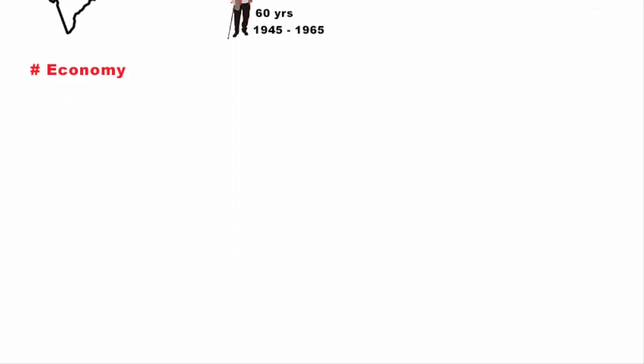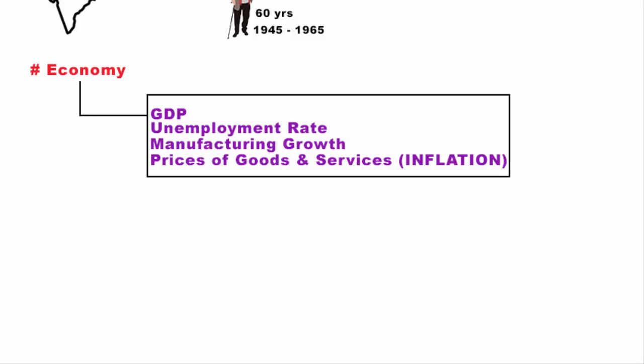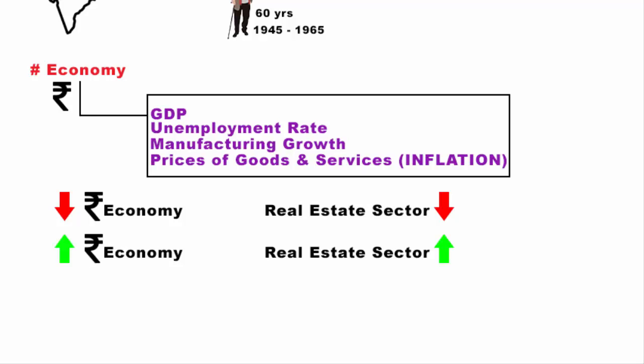The second factor is the economy as a whole. When we think of the word economy, economic terms like GDP, unemployment rate, manufacturing growth, and the prices of goods and services come to mind. These are the key economic indicators that tell us about the health of the economy — whether the economy is growing or slowing down. Simply put, if the economy is sluggish or poor, then the real estate sector will be sluggish as well, and vice versa.